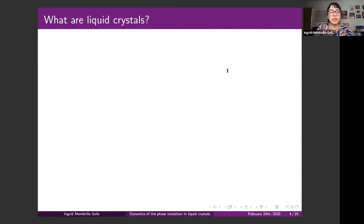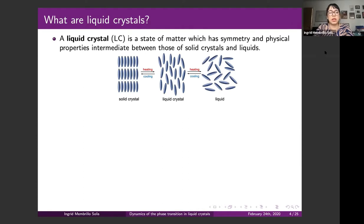The first question is: what is a liquid crystal? A liquid crystal is a state of matter which has symmetry and physical properties intermediate between those of a solid crystal and a liquid. In a solid crystal, the arrangement of molecules is well-defined with a periodic arrangement. In a liquid, molecules do not present any particular arrangement — no orientation or periodicity at all. In a liquid crystal, the key characteristic is that molecules will prefer orientation; they will be oriented with respect to some direction.